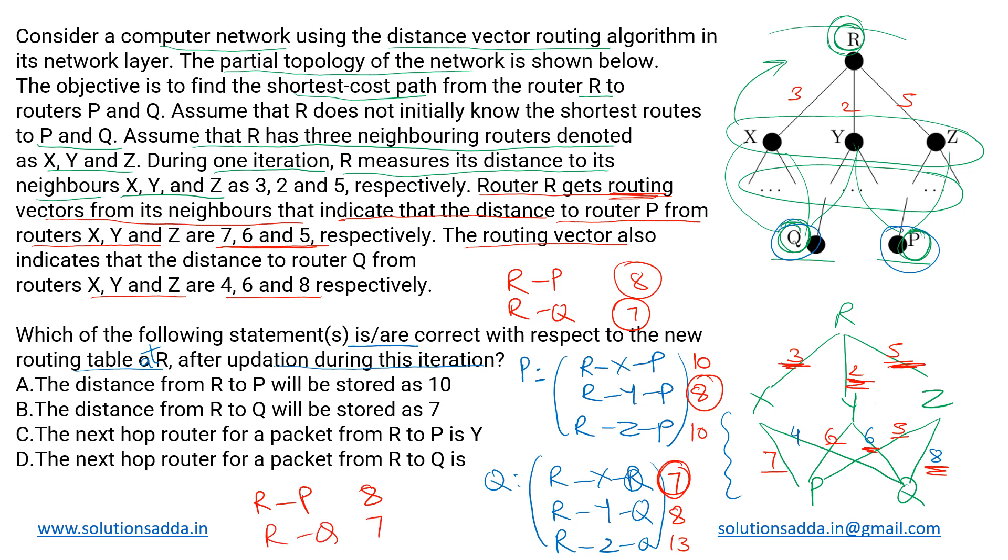Let's have a look at the options. First one A saying the distance from R to P will be stored as 10. No, it will be stored as 8, so that's incorrect. Then the distance from R to Q will be stored as 7. That is what we have just calculated, so this is true.